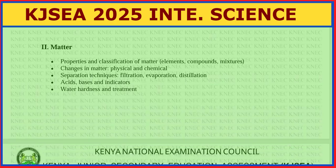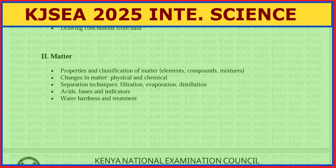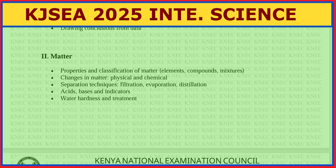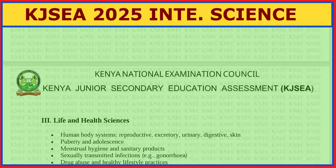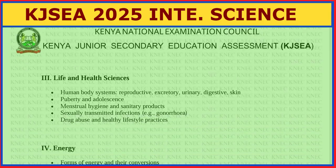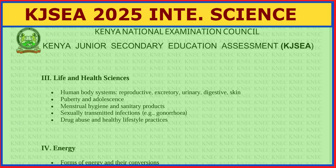In Properties of Matter, topics include classification of matter — elements, compounds, mixtures, atoms — physical and chemical changes, separation techniques such as filtration, evaporation, and distillation, acids, bases and indicators, and water hardness and treatment. In Life and Health Science, human body systems include the reproductive, excretory, urinary, and digestive systems, and the skin. Also covered: puberty and adolescence, menstrual hygiene, sexually transmitted infections such as gonorrhoea, syphilis, and chancroid.